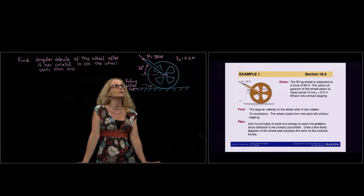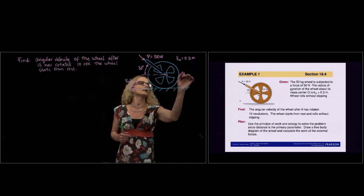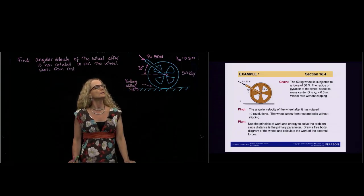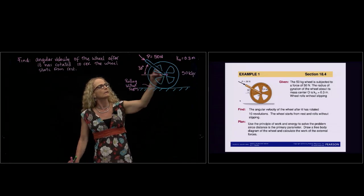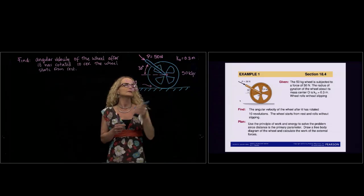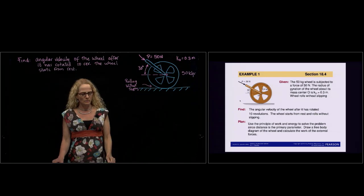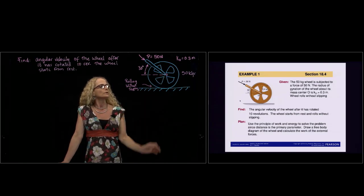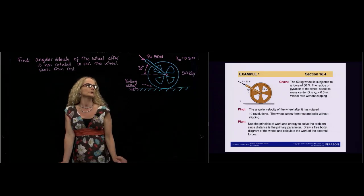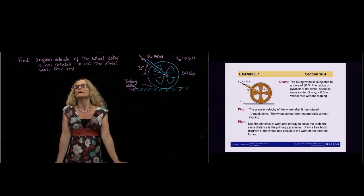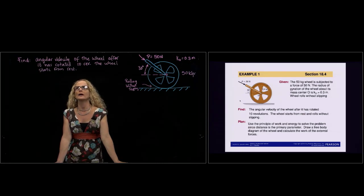We have here 50 kilograms. Let me write it down. So this is a 50 kilogram wheel that is subjected to a force of 50 newtons and that force is along that rod right here. So as you remember, the forces are sliding vectors. So that's about the same as applying the force in the center of the wheel. And the radius of gyration of that wheel is 0.3 meters over the point O, which is the center of mass of the wheel. The other piece of information that I've given is that it's rolling without slipping. That's a very important piece of information. And then we are being asked to find the angular velocity of the wheel after it has rotated 10 revolutions. The wheel starts from rest.